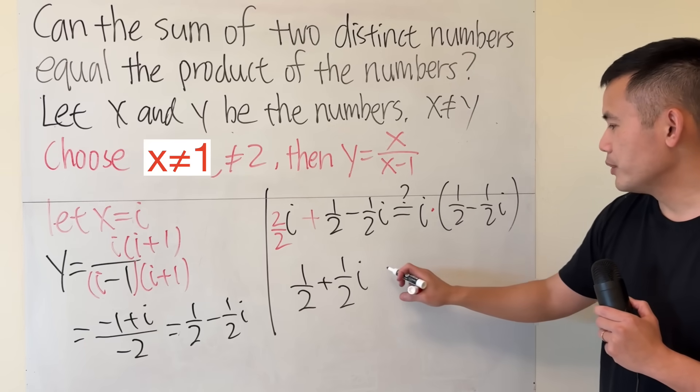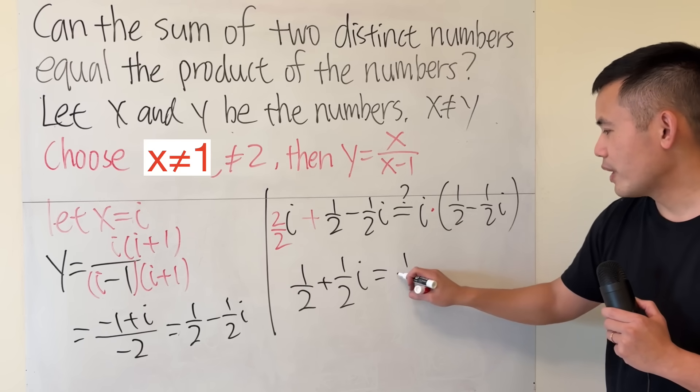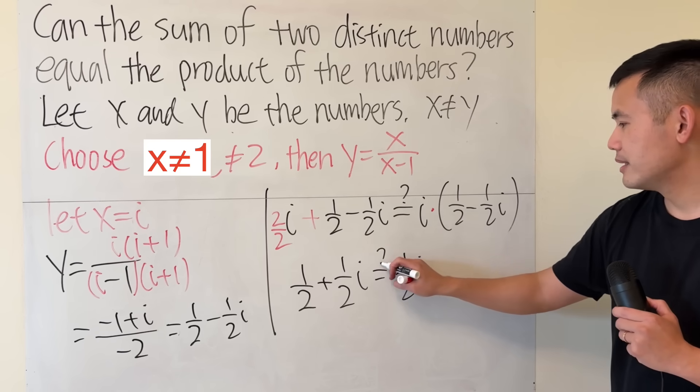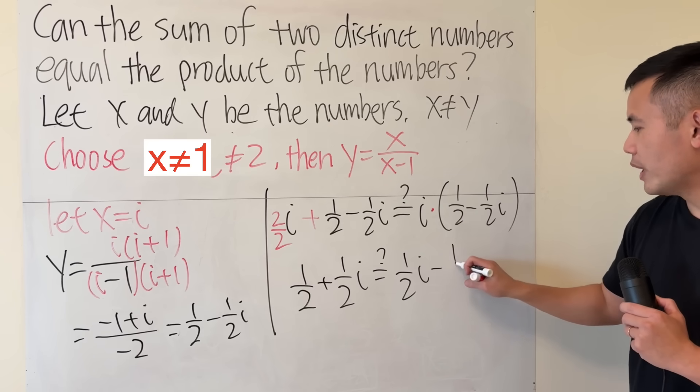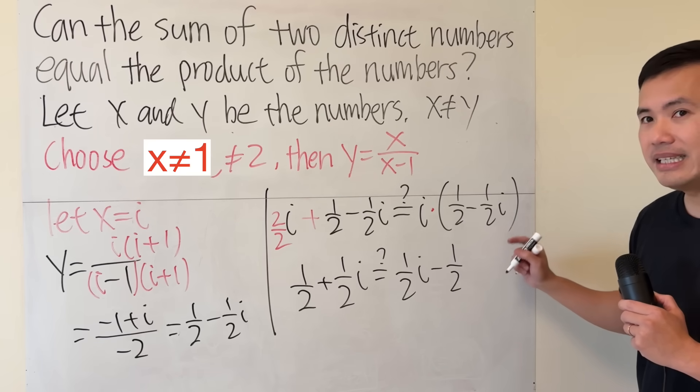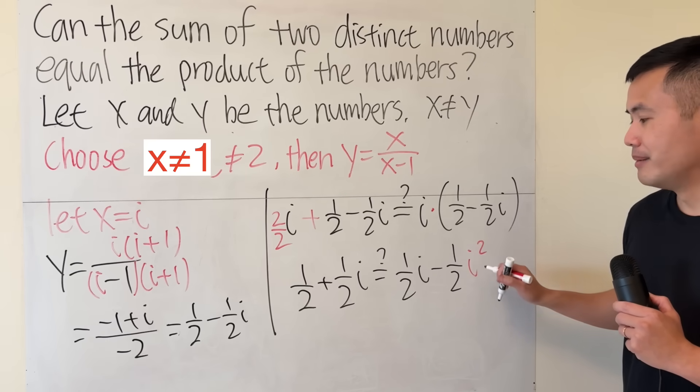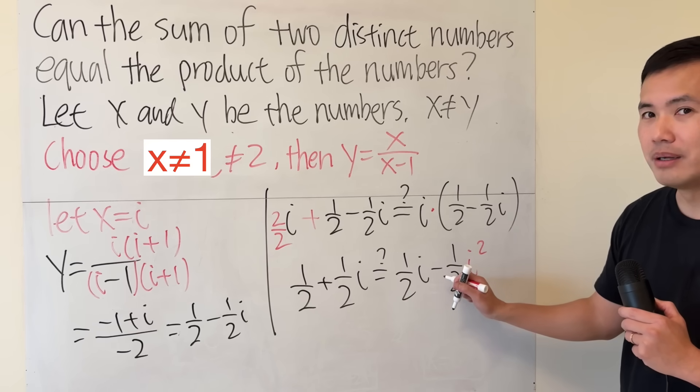Here, if you distribute, this will give us 1 half i. I don't know yet, so I'll put down a question mark. And then minus 1 half i times i is i squared. But i squared will turn that into a positive 1 half.